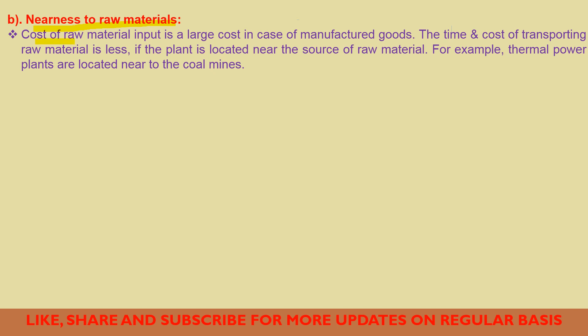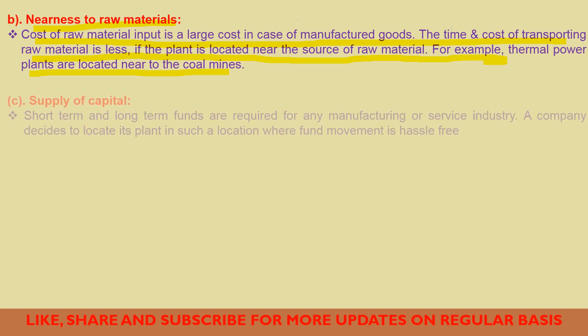The cost of raw materials is a large cost in the case of manufactured goods. The time and cost of transporting raw materials is less if the plant is located near the source of raw materials. For example, thermal power plants are located near coal mines.